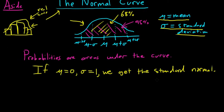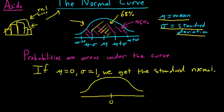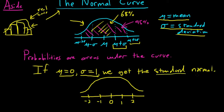The standard normal, or standard normal distribution, is the same as the normal distribution except it's a special case where the mean is 0 — so that goes in the middle — and sigma is 1. So when you compute mu plus sigma, you just get 0 plus 1, which is 1. And mu plus 2 sigma gives you 2. Here you get negative 1, and here you get negative 2. This is called the standard normal curve.